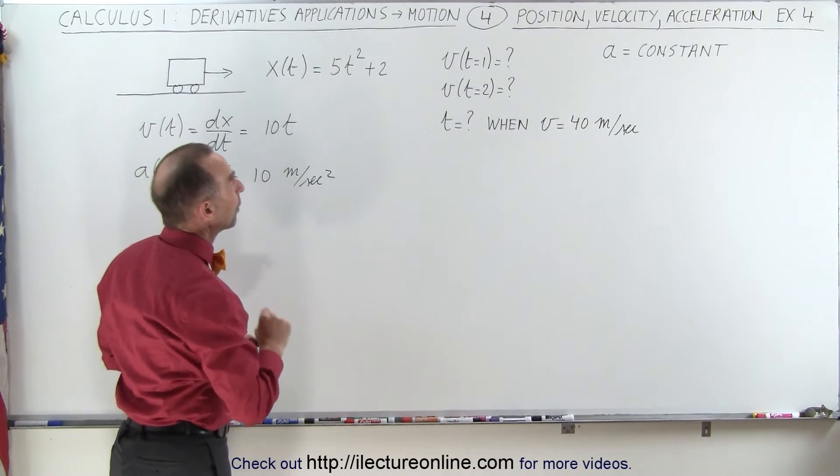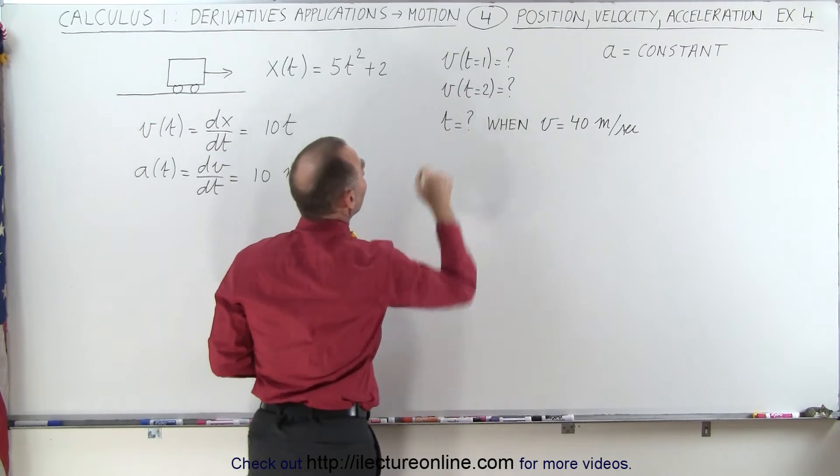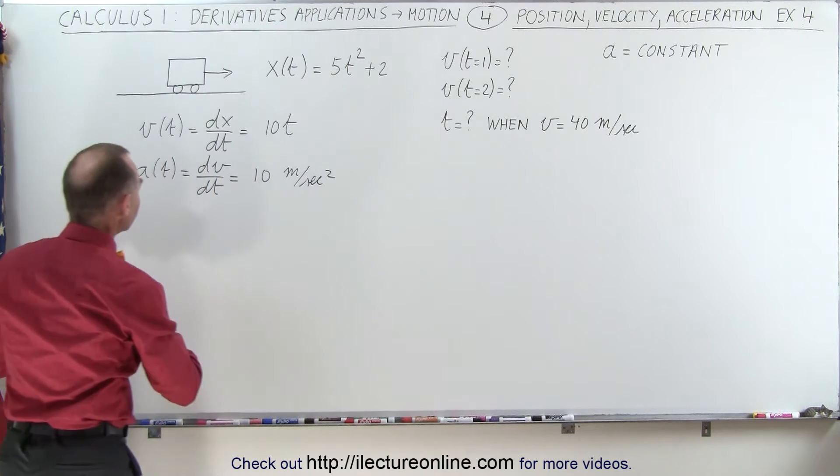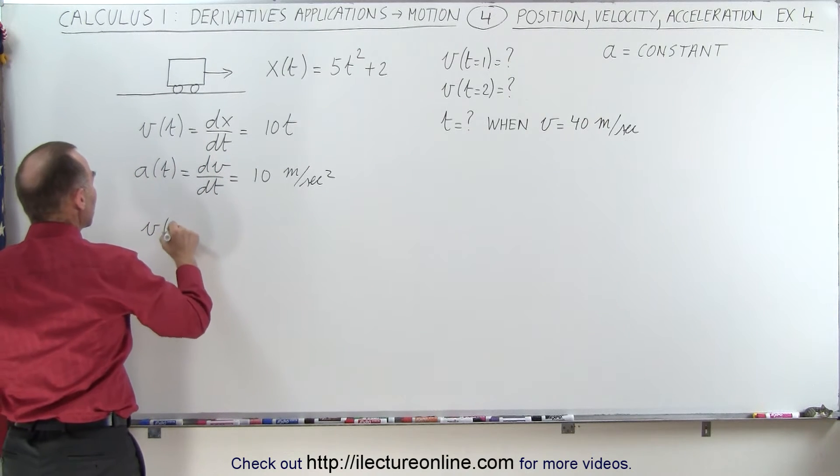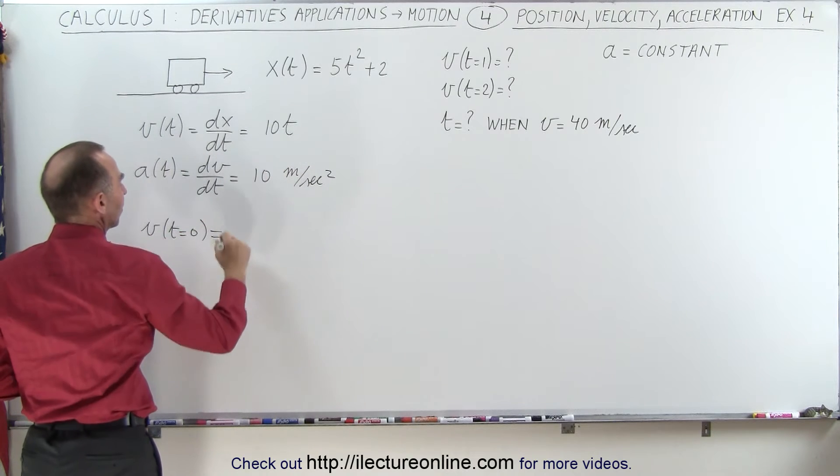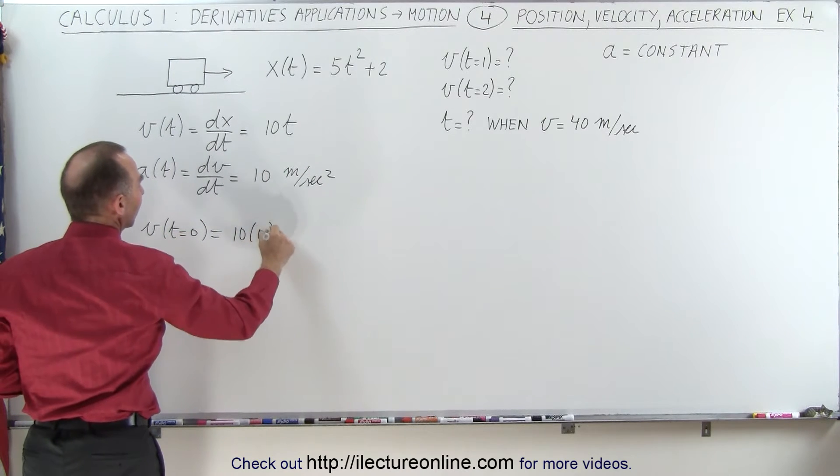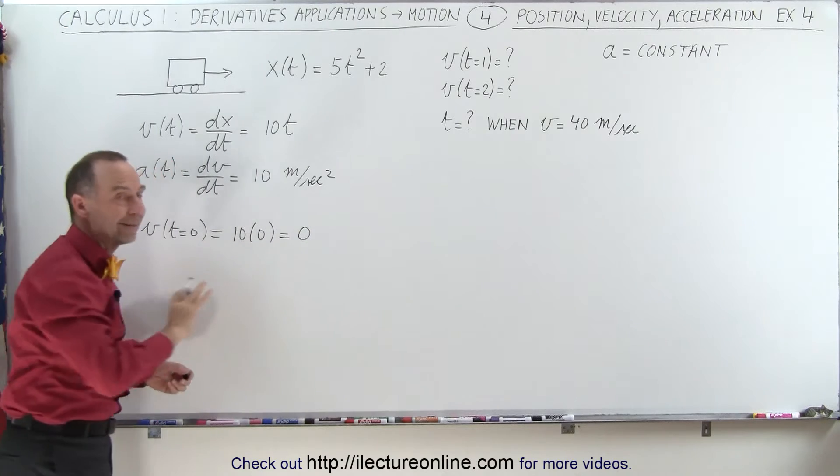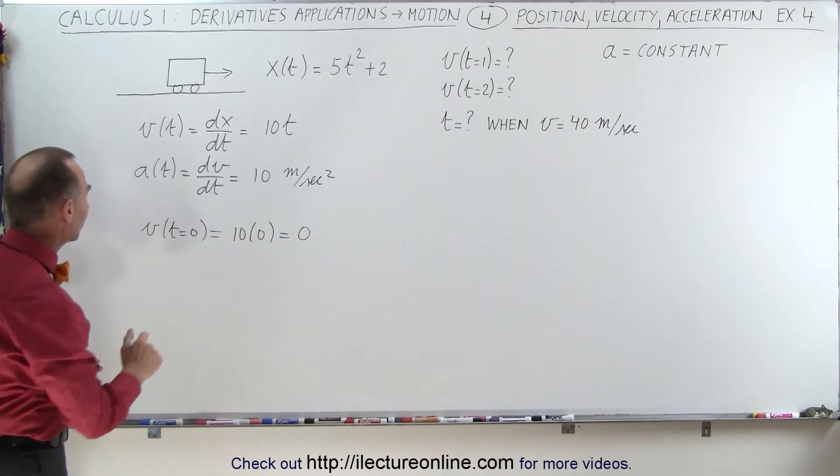And now what we're going to do is calculate the velocity at these various times. Let's start with velocity at time equals 0, even though they didn't ask for it. So we have our velocity equation, 10 times 0 equals 0, so the object is not moving at time equals 0.